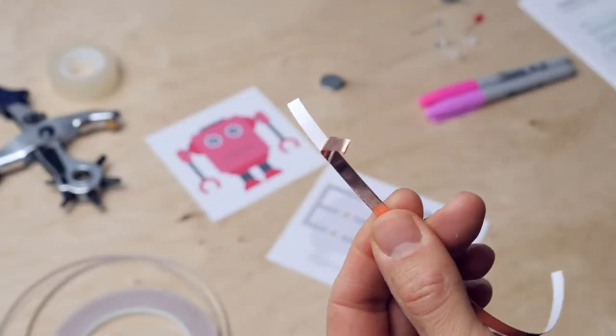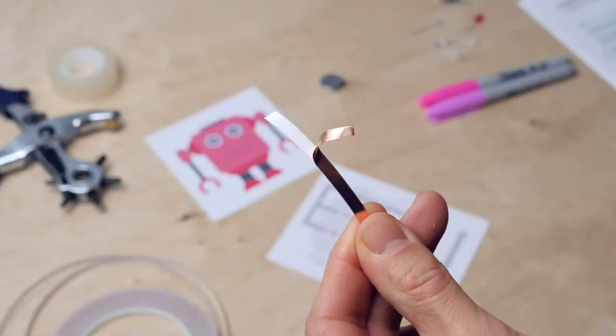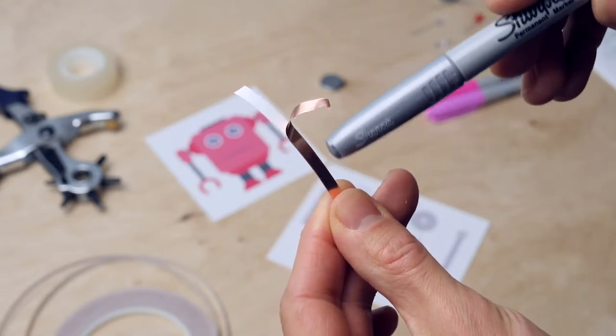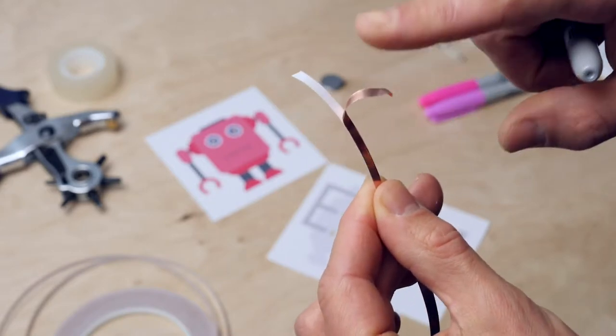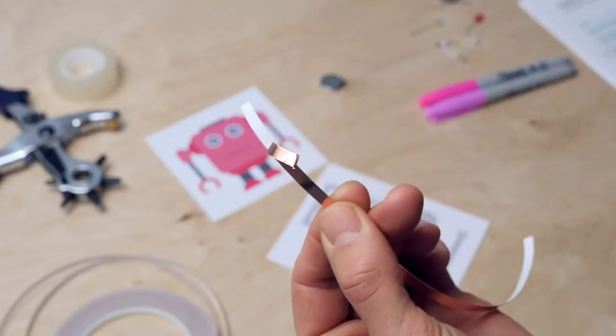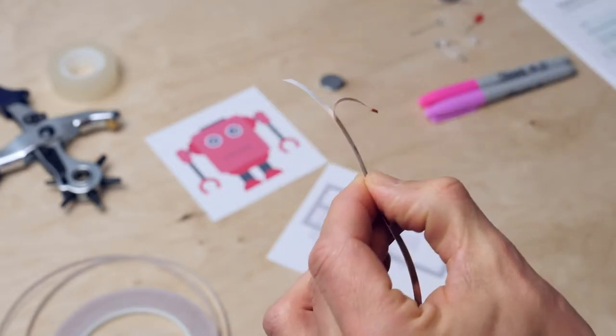Copper tape often only has one conducting side, one side that allows the current to flow through—often this is the top. On the bottom there is glue of course. It is possible when you cut the tape that the current cannot flow through it anymore and then your LED will not light up.